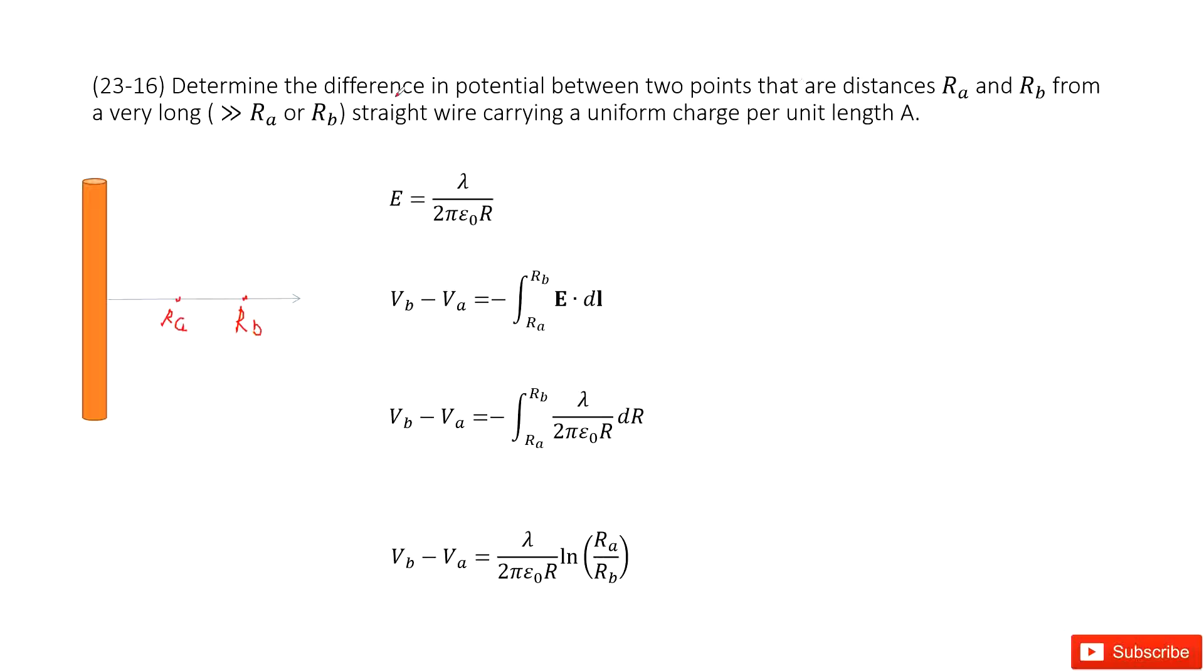Now, we also know this is a very long straight wire carrying uniform charge per unit length. So the charge density is lambda.